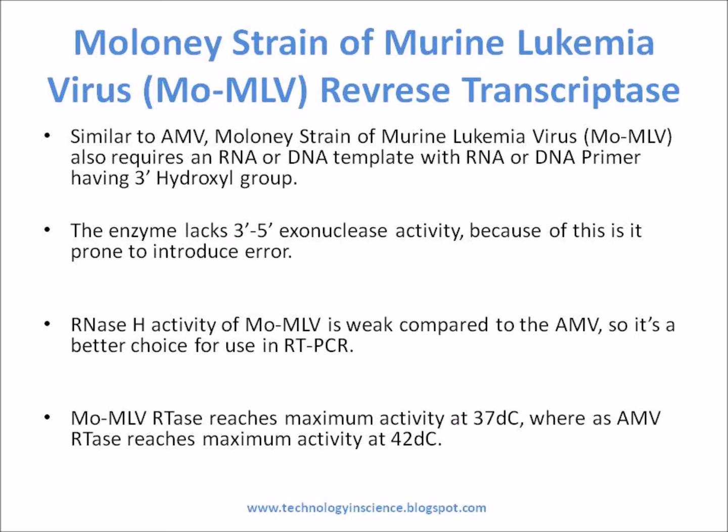Moloney strain of murine leukemia virus, MOMLV, reverse transcriptase. Similar to AMV, MOMLV also requires an RNA or DNA template with an RNA or DNA primer having a 3' hydroxyl group. The enzyme lacks 3' to 5' exonuclease activity, and because of this it is prone to introduce errors. The RNase H activity of MOMLV is weak compared to AMV, so it is a better choice for use in RT-PCR.